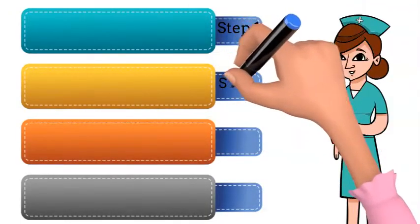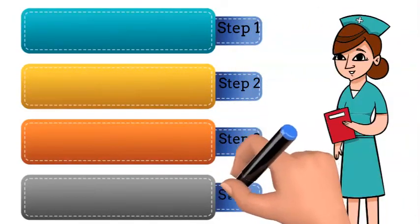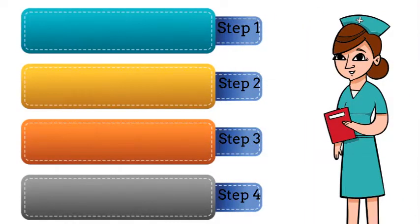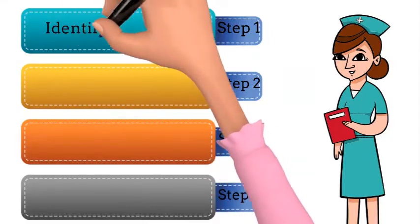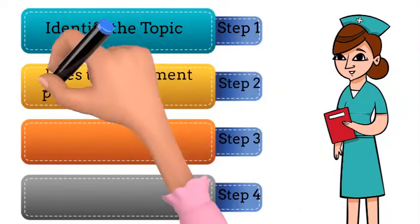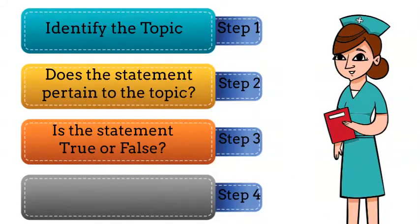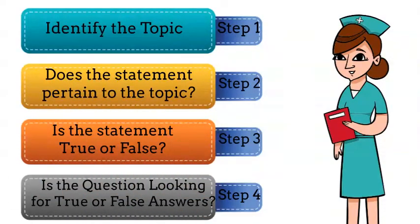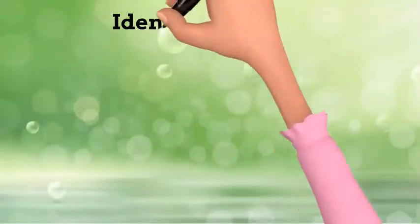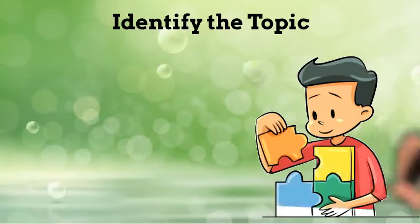Acing these types of questions is easier than you think when you use my four easy steps. Step one: identify the topic. Step two: ask if the statement pertains to the topic. Step three: decide if the statements are true or false. Step four: decide if the question was looking for true or false answers. Let's break each of these steps down.